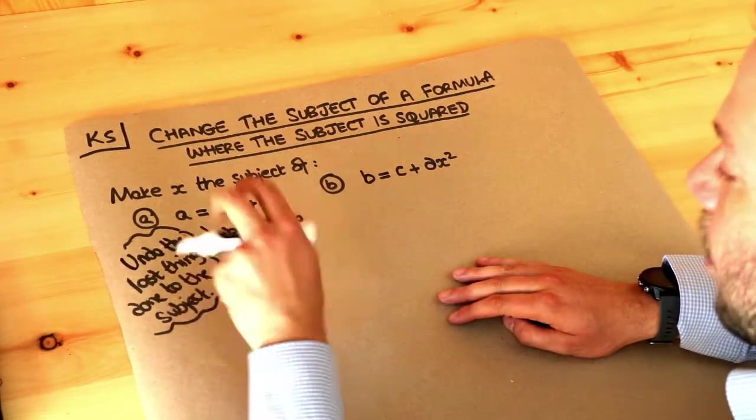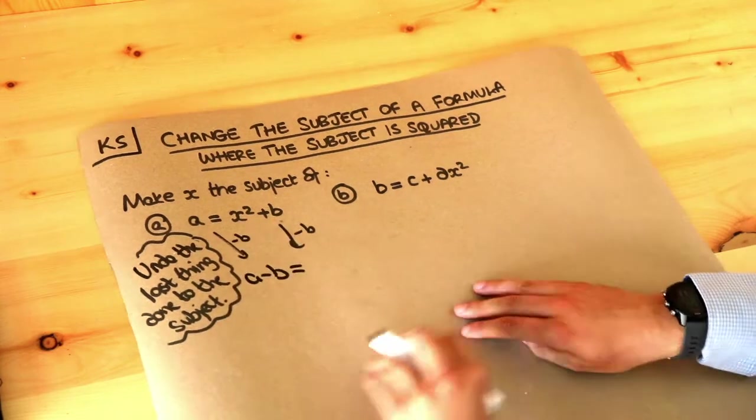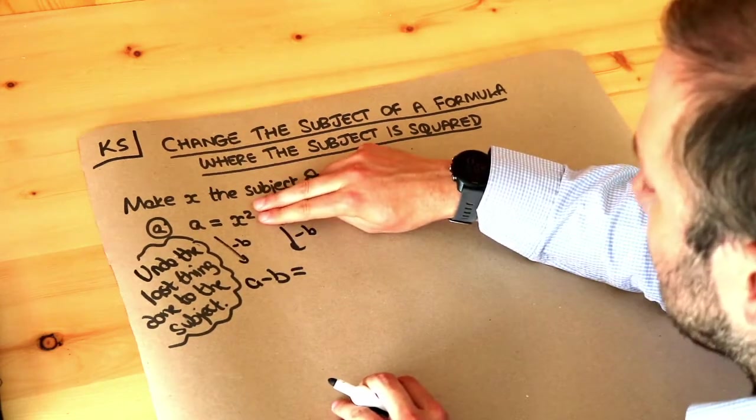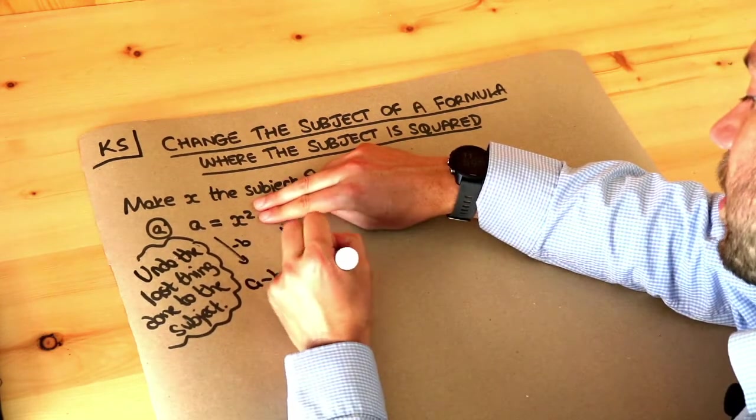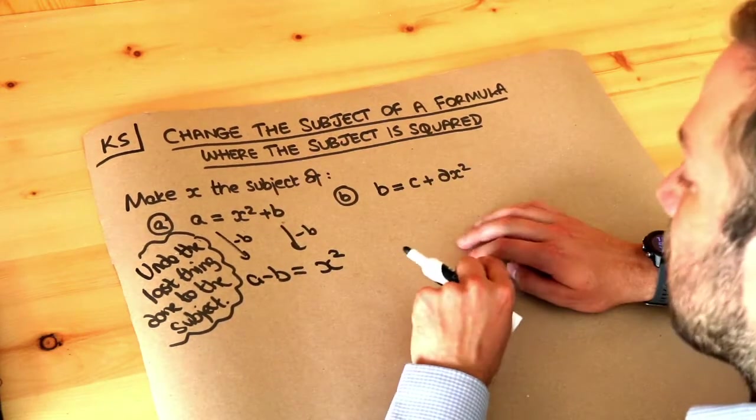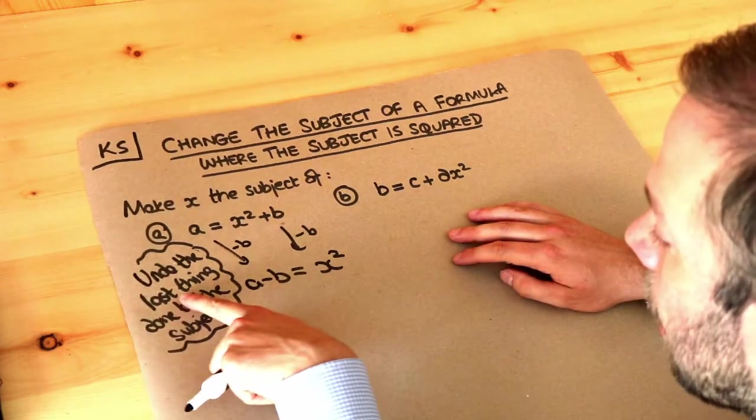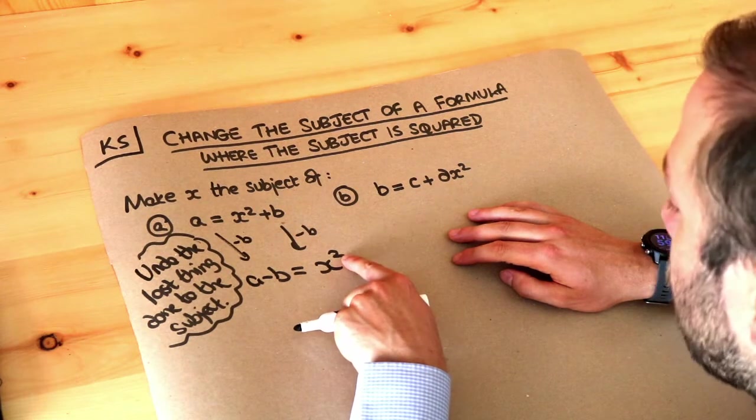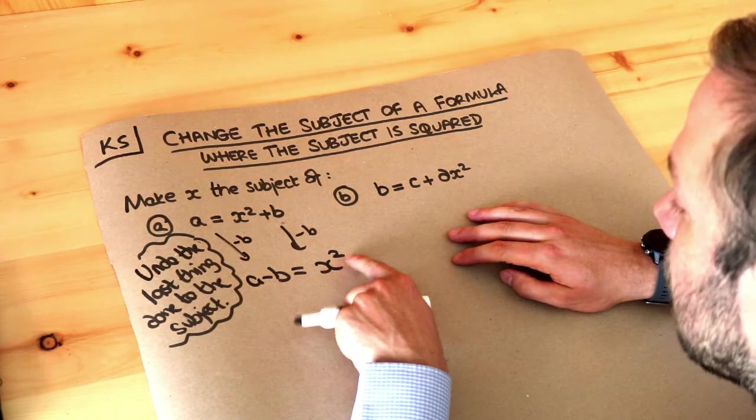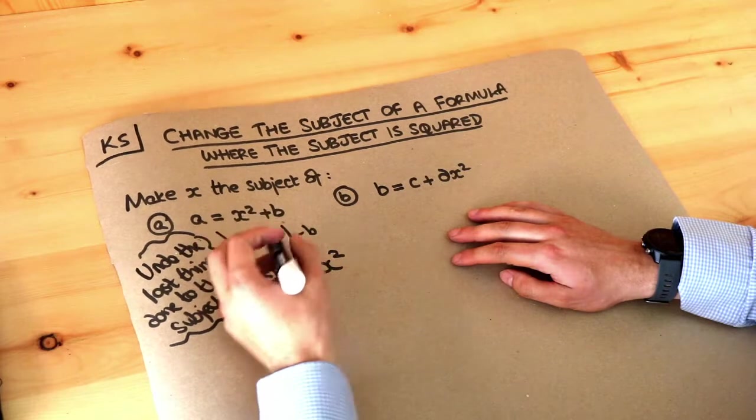So we get a minus b on the left, and on the right hand side by subtracting b we're getting rid of that plus b, leaving just x squared. So we're almost done here. We've got to again undo the last thing done to the subject. x was squared, we want to undo that squared, so we square root both sides of the equation.